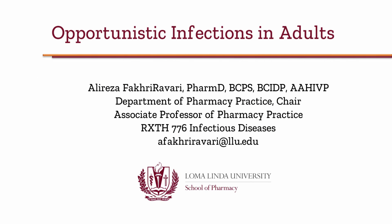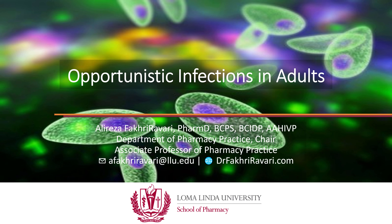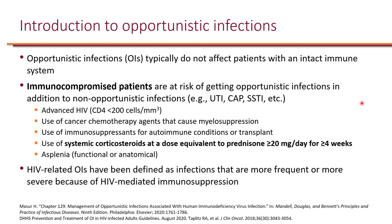I'm Dr. Fakirabadi and this is Opportunistic Infections in Adults. Opportunistic infections typically do not affect patients with an intact immune system. The name 'opportunistic' refers to the fact that these infections take advantage of immunocompromised patients.